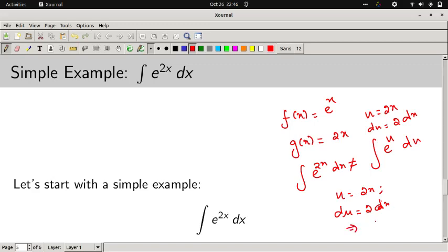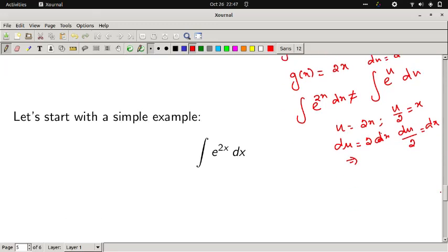But I can choose it such a way that u by 2 equals x, so du by 2 equals dx. Then everything becomes very clear. Instead of taking u equal to x, u by 2 equals x, both are the same. Then we can take it as 1 by 2 exponential of u du.